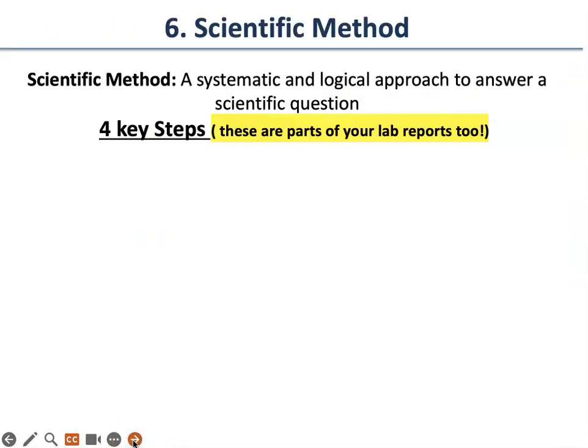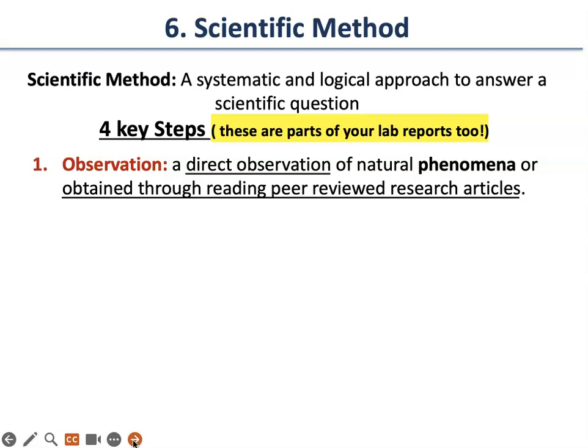Now, a major topic: the scientific method. It is a systematic and logical approach to answer a scientific question. There are four key steps, and this will be part of your lab reports too. The first step is observation — a direct observation of a natural phenomenon, or obtained through reading other people's published research, also known as peer-reviewed research articles.